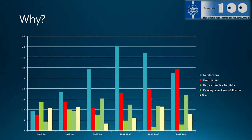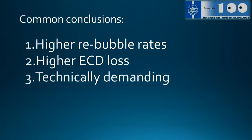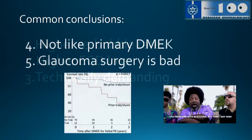The last thing I want to talk about is DMEK on PKP. Looking at our keratoplasty trends over the last 50 years, in recent years it is moving toward graft failure — graft failure is now the main indication. So we are doing a lot of DMEKs on PKP because those grafts have a limited life, usually 15 to 20 years. The common findings from DMEK on PKP are higher rebubbling rates, higher ECD loss, it is technically demanding — not like primary DMEK — and glaucoma surgery carries a very bad prognosis for the graft.